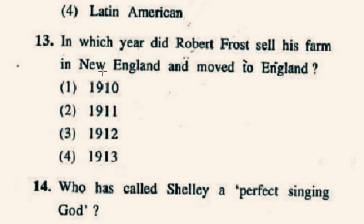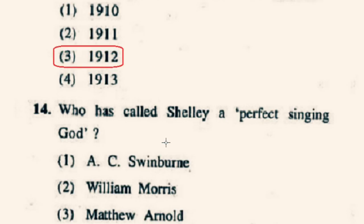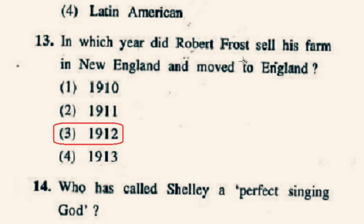Question number 13: In which year did Robert Frost sell his farm in New England and move to England? In 1912, Robert Frost sold his farm and moved to England. Option 3rd is correct: 1912. Robert Frost published his first full book of poetry, A Boy's Will, in 1913, and in 1914 another book, North of Boston, appeared, making Frost's reputation as a poet.